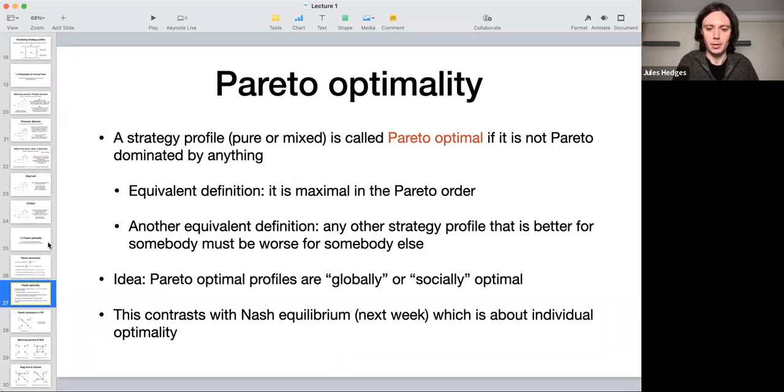So a more intuitive, unpacked definition of what it means to be Pareto optimal is that any other strategy profile that's better for one player must be worse for some other player. So that means that you're kind of globally optimal in the sense that you can't make things better somewhere without making things worse somewhere else. So this is kind of in contrast with the main definition we're seeing next week, which is Nash equilibrium, which is about individual optimality. Pareto optimality is kind of global or social in some sense.